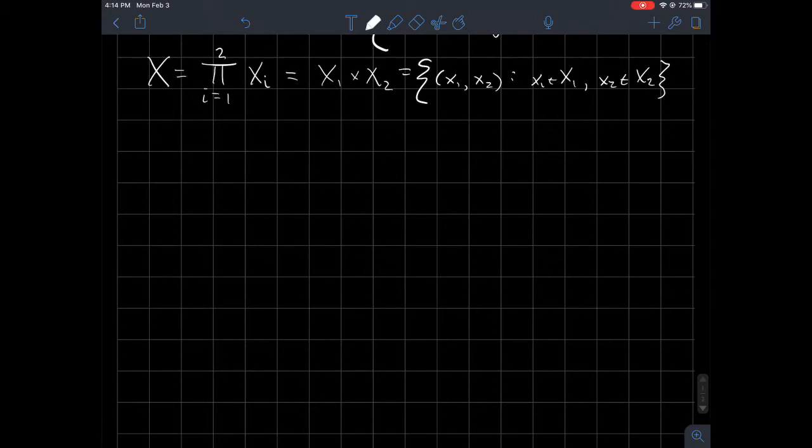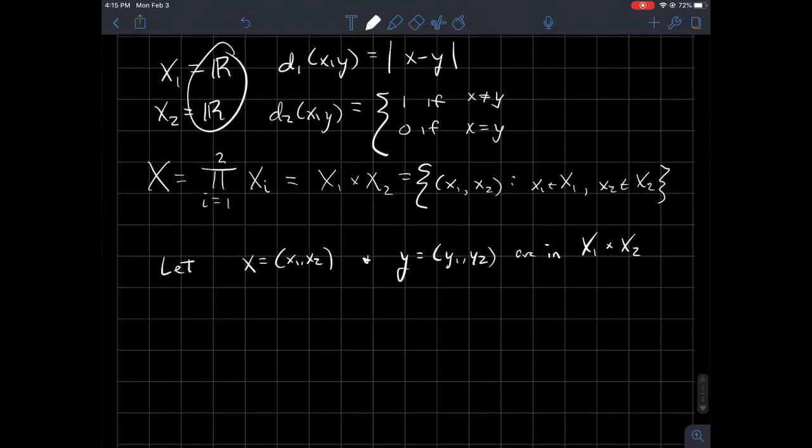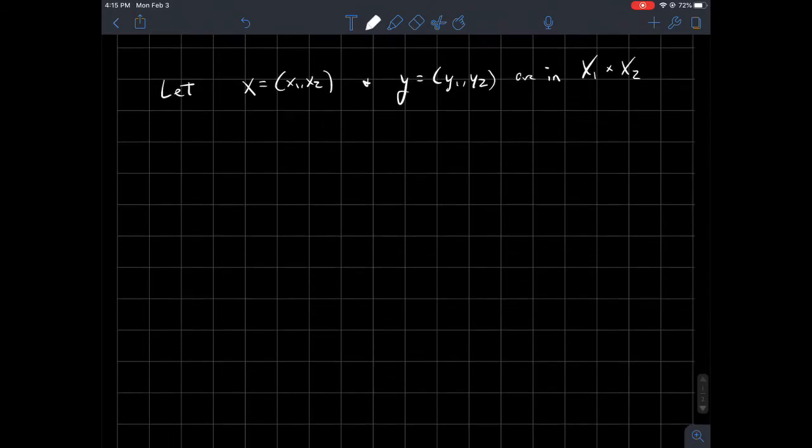And so the first one, we'll call it D. And let's say, maybe let me fix some notation here too. Let me say that little x here is the point X1, X2, and Y is the point Y1, Y2. And let's say that these are from the product space, big X1 cross big X2. And in my example here, I'm just using the real numbers as each component. Again, these can be any sets in general, you can always take a Cartesian product of.